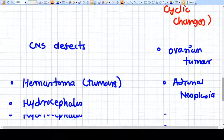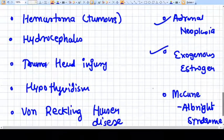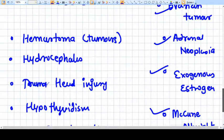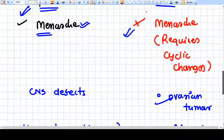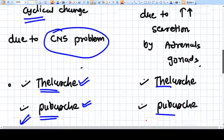Ovarian tumor, adrenal neoplasia, exogenous estrogen, McCune-Albright syndrome - all these things will secrete estrogen and progesterone independently.